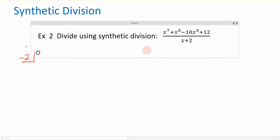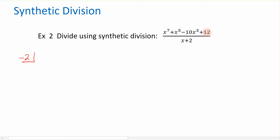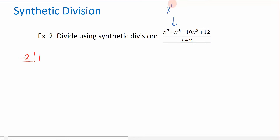The next part of the setup has to do with the coefficients of each of the terms in my numerator. Starting with x to the 7th — its coefficient is 1. Then I have x to the 5th, but what happened to x to the 6th? It's not in my expression, so we put a 0 as a placeholder for the x to the 6th term.